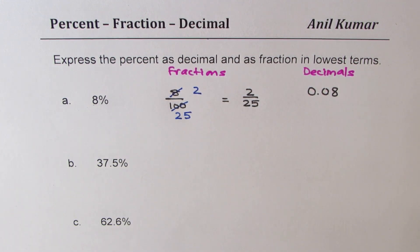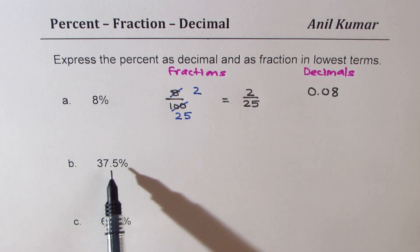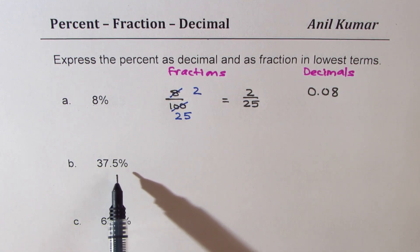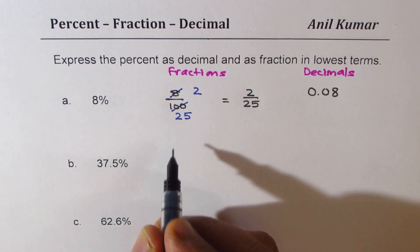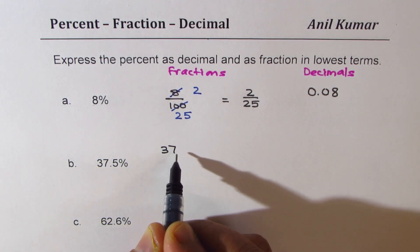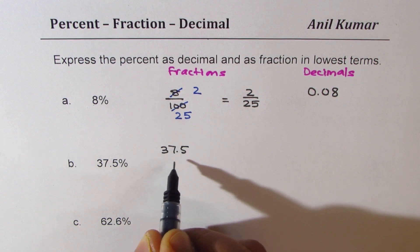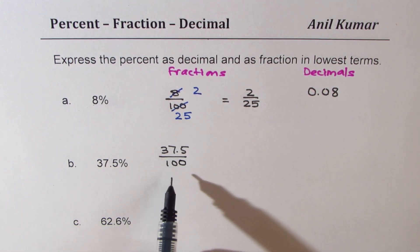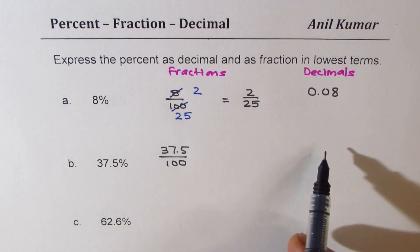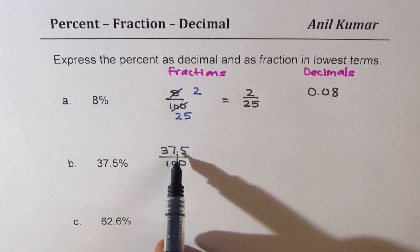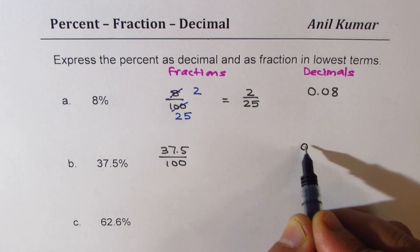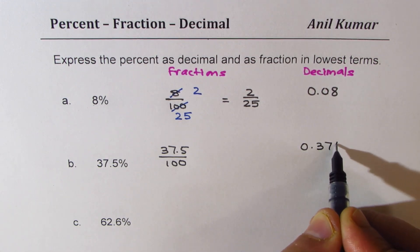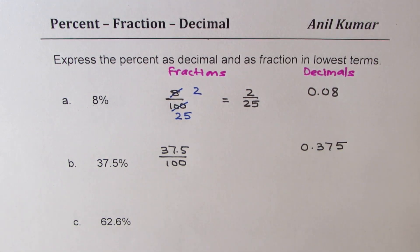So that is 8%. Now let us look into 37.5%. The first step is divide the whole number by 100, so we get 37.5 divided by 100. Write the decimal equivalent by moving the decimal two places to the left, and we get 0.375 as the decimal equivalent.